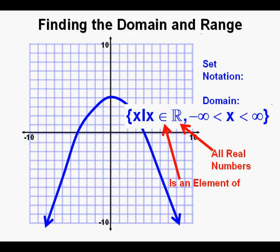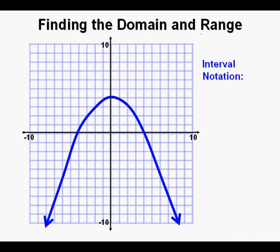This capital R represents all real numbers. I don't see these symbols as extremely important, but I just wanted to familiarize you with them so you'll recognize them the next time you see them — sometimes they appear on tests to try to confuse you. Finally, we have interval notation which uses parentheses and brackets to define the set of the domain: open parentheses, negative infinity, comma, infinity, then closed parentheses.